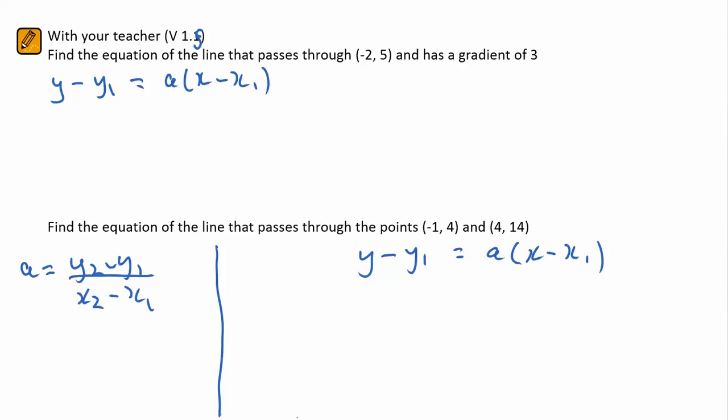We're now going to look at how we can use the gradient point equation of a straight line to find the straight line equation in each instance, y equals ax plus b. In the first instance you're given a point and you're given the gradient of 3.